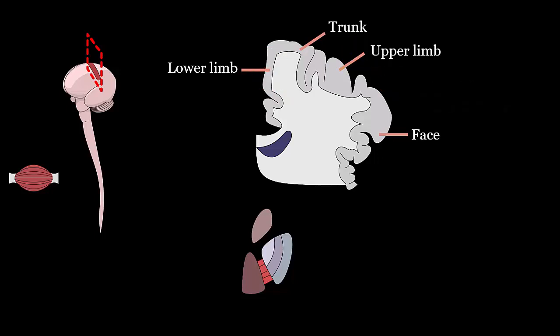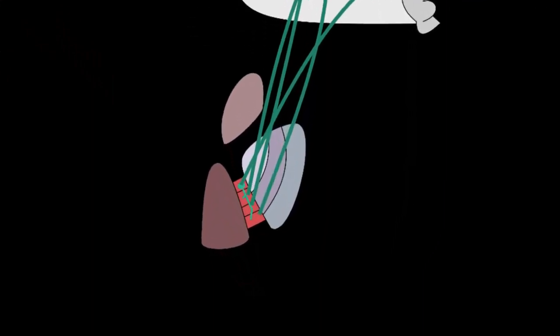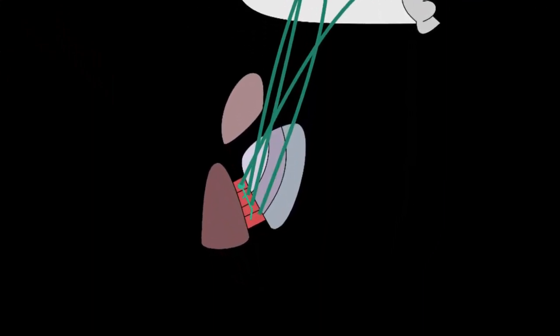Now let's get back to the spinal cord pathway. The axons of these neurons via the corona radiata enter the internal capsule, which is shown here. Notice that medial to the internal capsule is the thalamus and caudate. The globus pallidus and putamen is lateral.